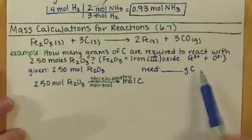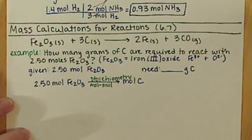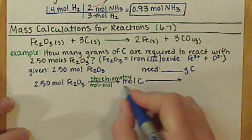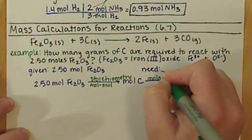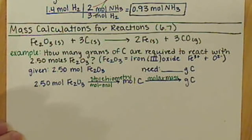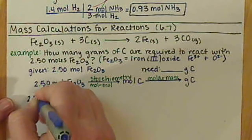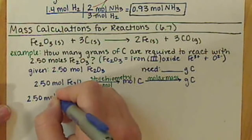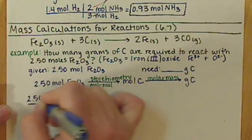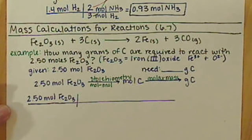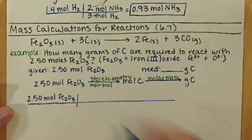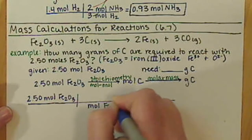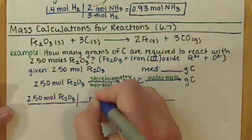Then we're looking for grams of carbon. Remember, we're going to combine our stoichiometry and our molar mass. So our last step is going to be to go from moles of carbon to grams of carbon, and the conversion factor we're going to use is our molar mass. So we're going to start with our 2.50 moles of Fe2O3 and set up our conversion factor. We want to convert from moles of Fe2O3 to moles of carbon, so we put moles of Fe2O3 in the denominator so our units cancel, then moles of carbon up top.